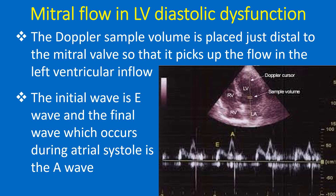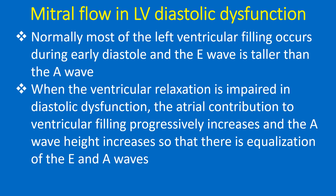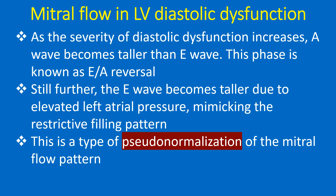The initial portion of the mitral diastolic flow is called the E-wave (early diastolic), and the final portion which occurs during atrial systole is called the A-wave. Normally, most of the left ventricular filling occurs during early diastole and the E-wave is taller than the A-wave. When ventricular relaxation is impaired in diastolic dysfunction, the atrial contribution to ventricular filling progressively increases and the A-wave height increases, leading to equalization of E and A-waves. As severity increases, the A-wave becomes taller than the E-wave — this phase is known as E-by-A reversal.